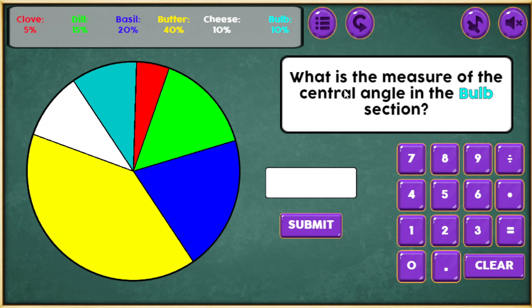This particular question says, what is the measure of the central angle in the bulb section? So this is blue. It's color-coded bulbs up there. So those match, and that's 10% of the pie chart. So in this one, you can always use a calculator. Well, you actually have to use a calculator either way. You could either type in the number directly or calculate it and then submit it, and I'll show you both ways.